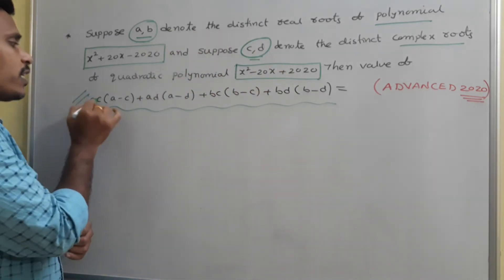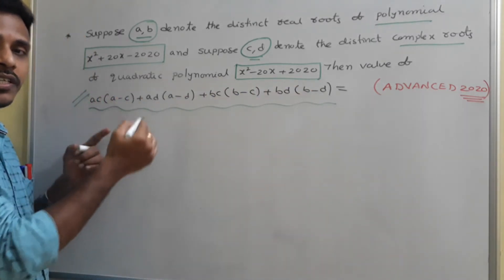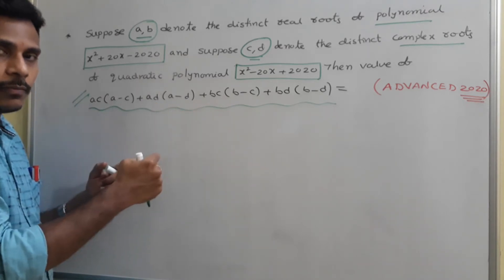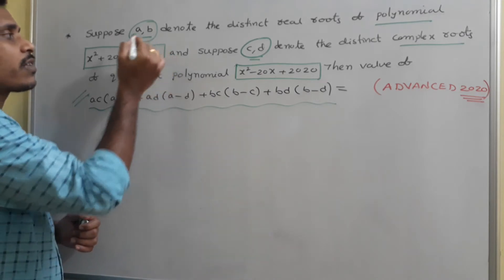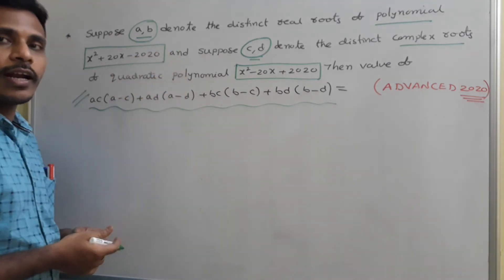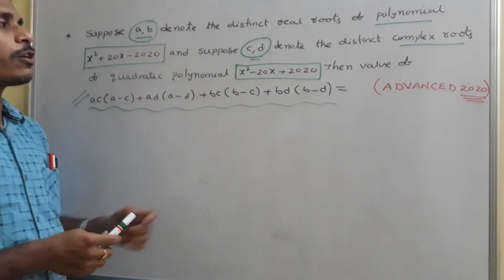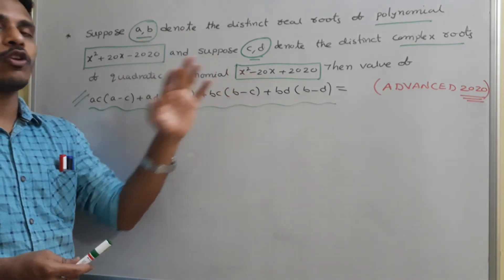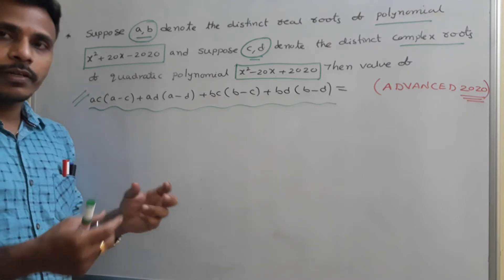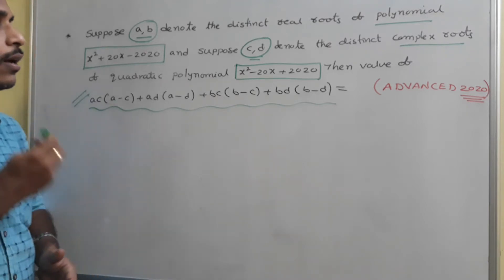Our intention is to find the value of this expression, which involves a, b, c, d. Since it is involved with a, b, c, d, we are very familiar with writing sum of the roots and product of the roots for a quadratic polynomial. With that idea, we use sum of roots and product of roots for these two polynomials. From there, if required, we can find a² + b², c² + d², and different values from the quadratic.